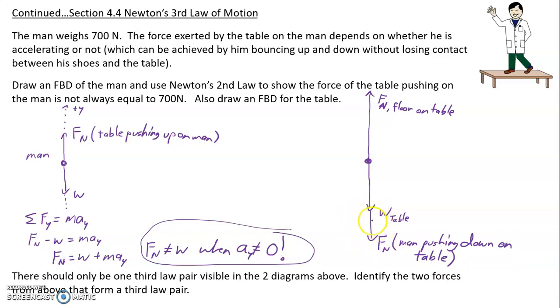Okay. Now you think, oh, couldn't we just put the man's weight here? Well, we could if the acceleration were equal to zero. But anytime the acceleration is not equal to zero, then the normal force and weight are not the same. So he will push down on the table with different amounts of force depending on what he's doing.